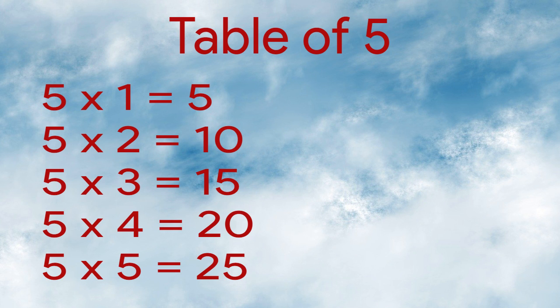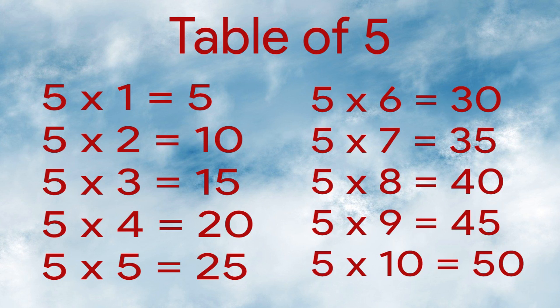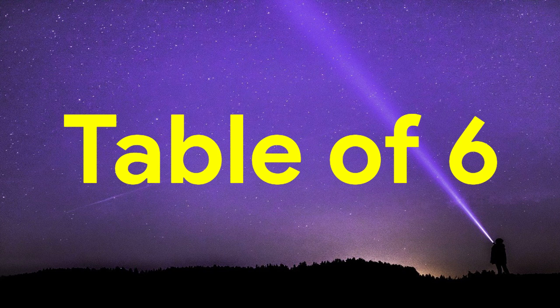Table of 5. 5 times 1 equals 5. 5 times 2 equals 10. 5 times 3 equals 15. 5 times 4 equals 20. 5 times 5 equals 25. 5 times 6 equals 30. 5 times 7 equals 35. 5 times 8 equals 40. 5 times 9 equals 45. 5 times 10 equals 50.